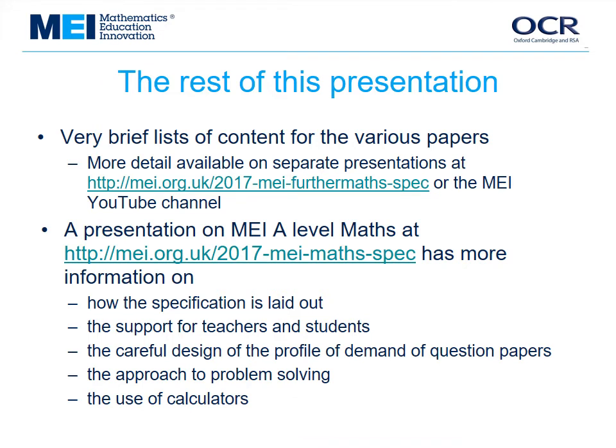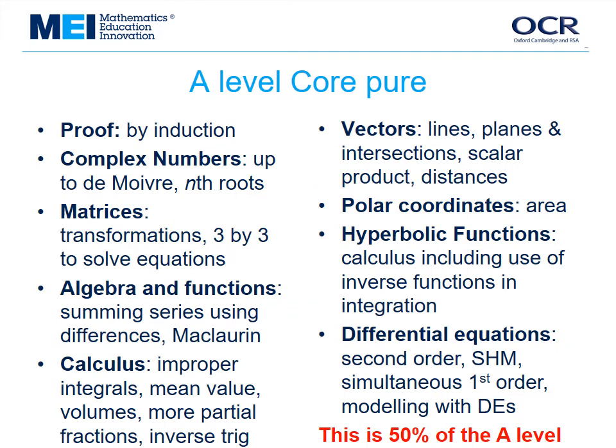The rest of the presentation gives a quick overview of the content of the different papers, with individual presentations on each strand available on the MEI website. The content of the A-Level Core Pure paper is given by the DFE — this is just an outline. One small item was added: one of the mandatory topics is finding the distance between two skew lines, which is hard to do without knowing about vector products. To ensure clarity and fairness across teachers, vector products were added in. The use of a calculator is expected.